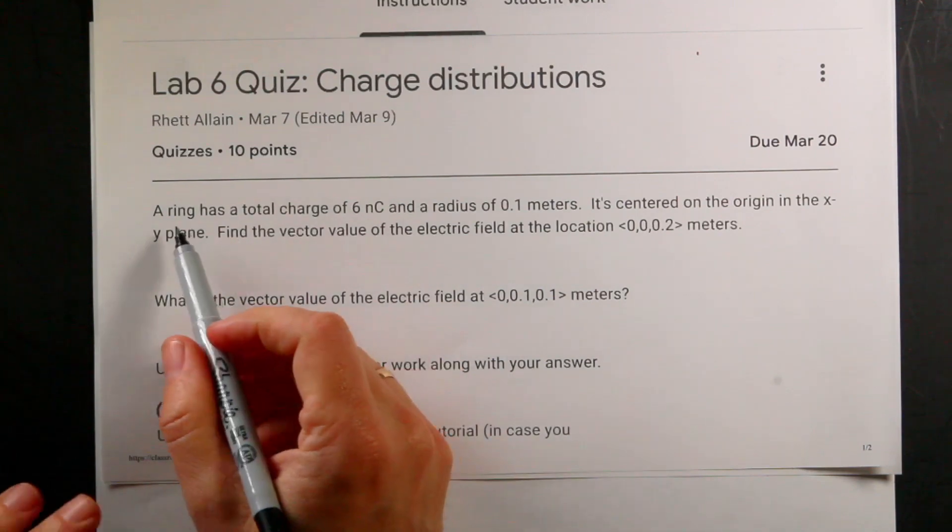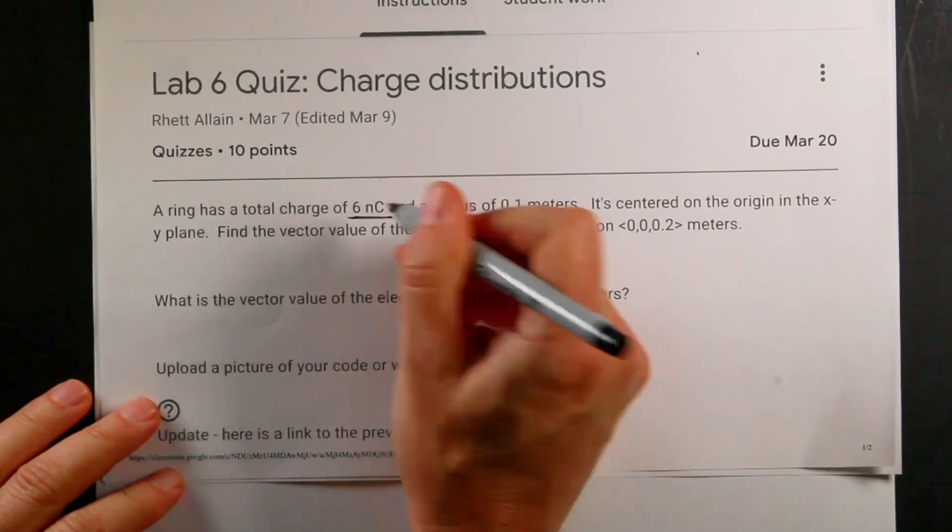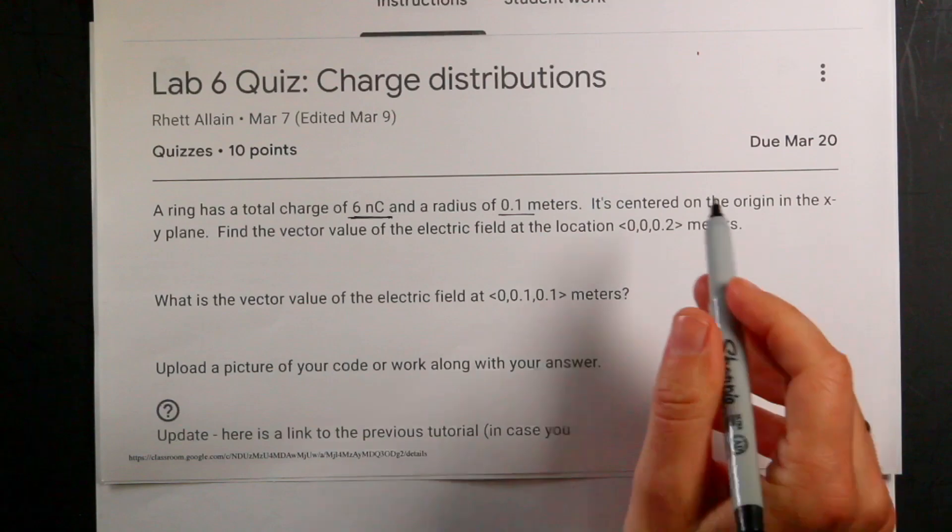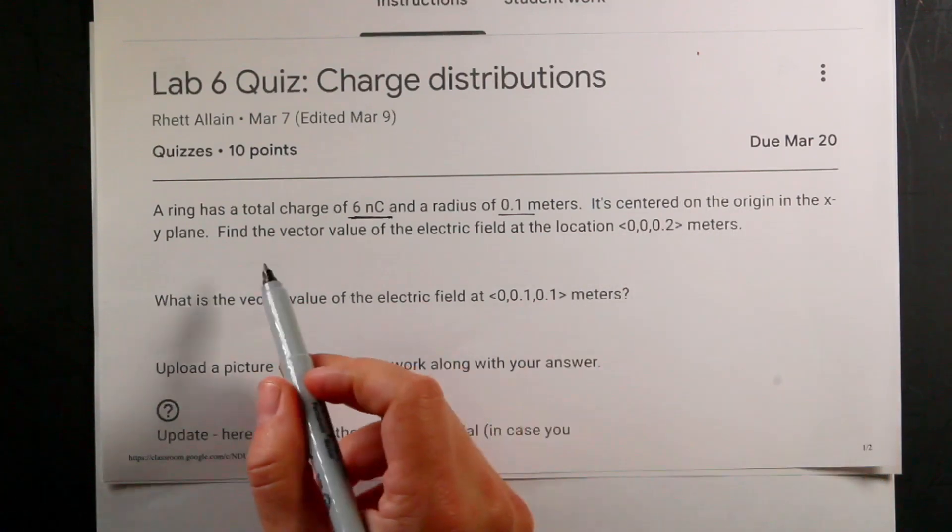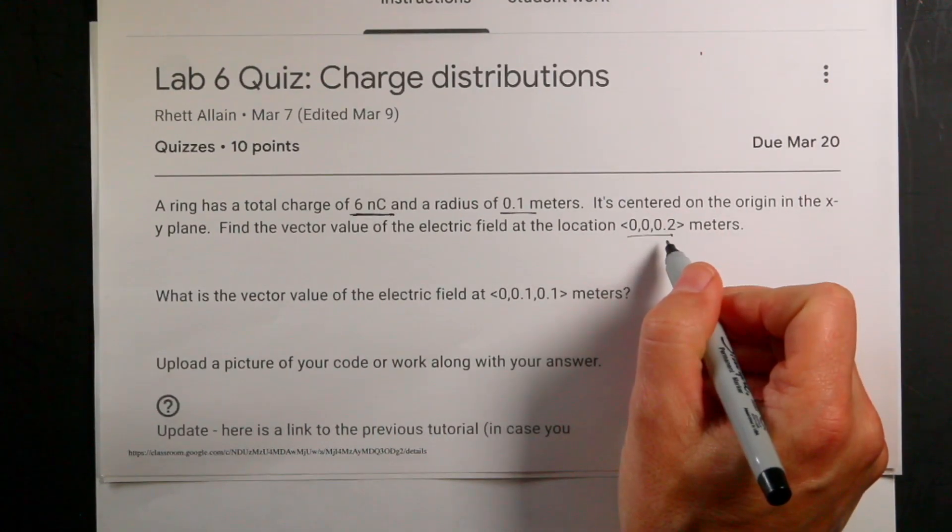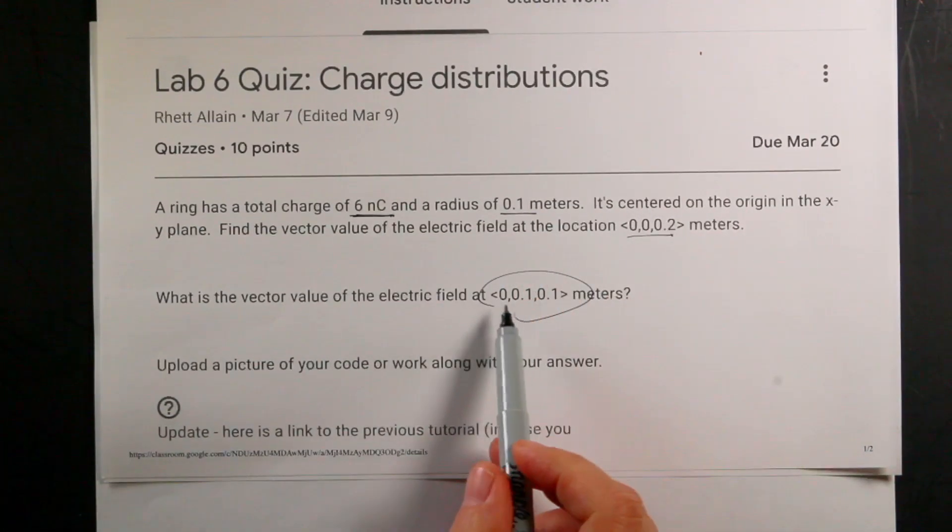The problem says a ring has a total charge of 6 nanocoulombs and a radius of 0.1 meters. It's centered on the origin of the xy plane. Find the vector value of the electric field at location (0, 0, 0.2) meters, and at (0, 0.1, 0.1). So two electric fields.